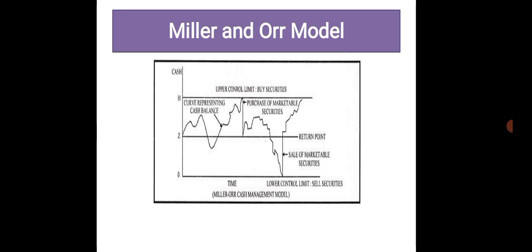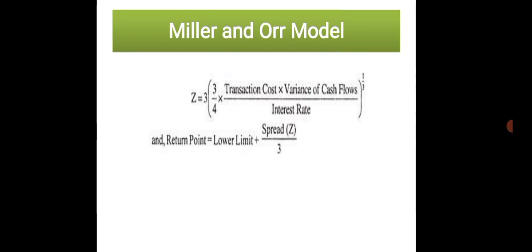These limits consist of an upper control limit H and lower control limit O, and the return point is Z. When cash balance touches the upper limit, marketable securities are purchased to the extent of H minus Z and cash balance comes down to normal level Z. When cash balance reaches the lower control limit, the firm will sell marketable securities to the extent of Z minus O and cash balance goes up to normal level Z. The spread between upper and lower cash balance limit can be calculated using this formula.